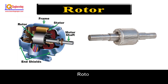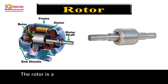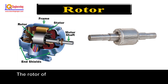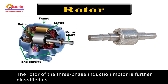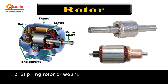The rotor is the rotating part of the induction motor. The rotor is connected to the mechanical load through the shaft. The rotor of the three-phase induction motor is further classified as: Number 1, Squirrel cage rotor. Number 2, Slip ring rotor or wound rotor.